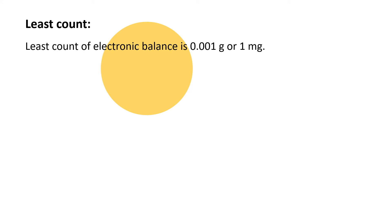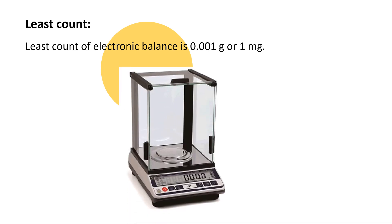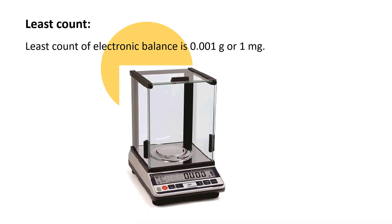The least count of an electronic balance is 0.001 g, which is 1 mg. This is the most accurate balance. This is the electronic balance — there is no left or right pan; there is only one pan on which the object is placed, and the reading is displayed digitally. This is the on/off button.